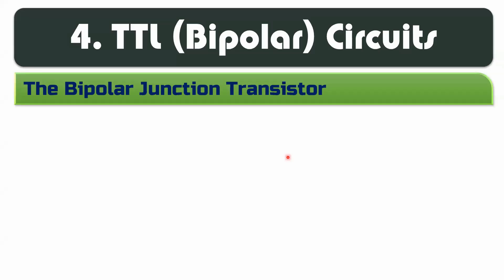We will take the second part of the technology: TTL circuits. TTL is a technology that uses transistors to improve the environment. The main transistor used in these circuits is the Bipolar Junction Transistor, which is the active switching element available in TTL circuits.